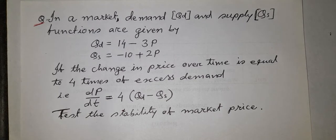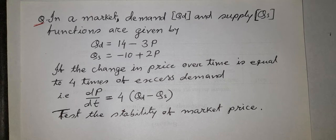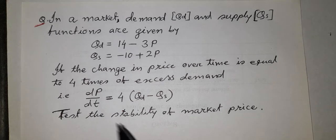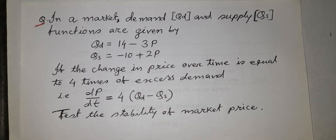Hello viewers. In this video we explain dynamic stability of market price with the help of integral calculus, where we use the technique of differential equations to study the stability of market price. Suppose in a market, demand and supply functions are given by Qd = 14 − 2p, Qs = −10 + 2p. If the change in price over time dp/dt = 4(Qd − Qs), test the stability of market price.